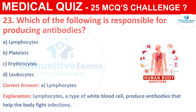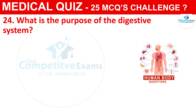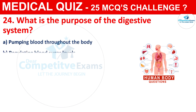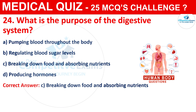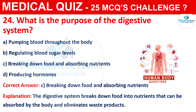Question 24: What is the purpose of the digestive system? The correct answer is C, that is Breaking down food and absorbing nutrients. The digestive system breaks down food into nutrients that can be absorbed by the body, and also eliminates waste products.